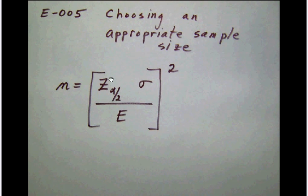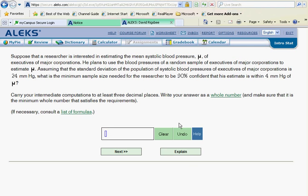Basically, what we're going to need then for inputs is a z alpha over 2 value that's based on a confidence. We're going to need this population standard deviation. And then we're going to need the amount of error. We're going to plug into that formula and we're going to crank. Let's go back over here now and see if we can read the story and pick out the pieces that we need.